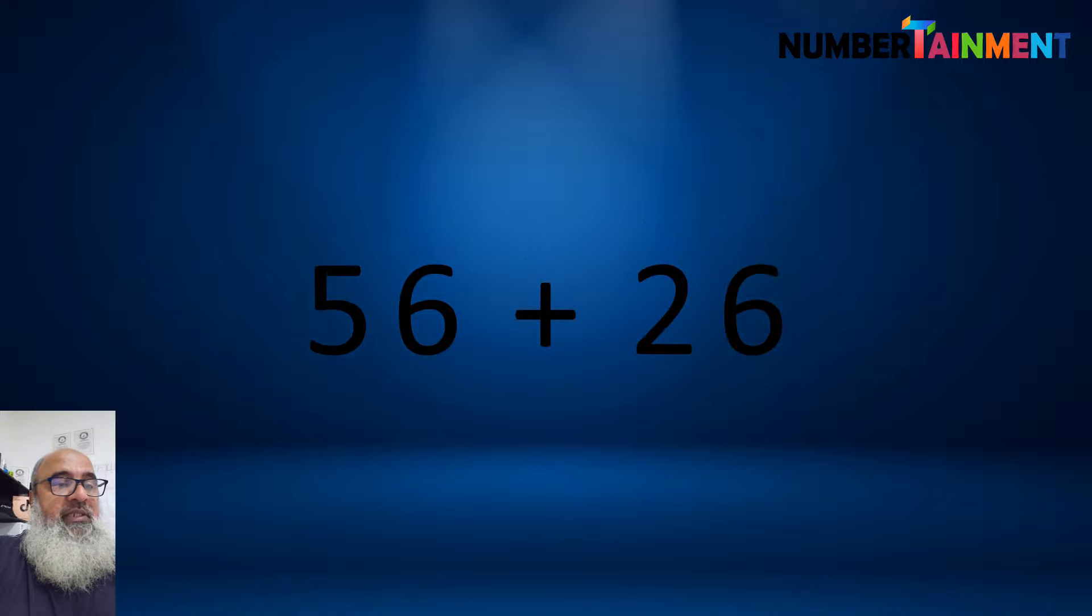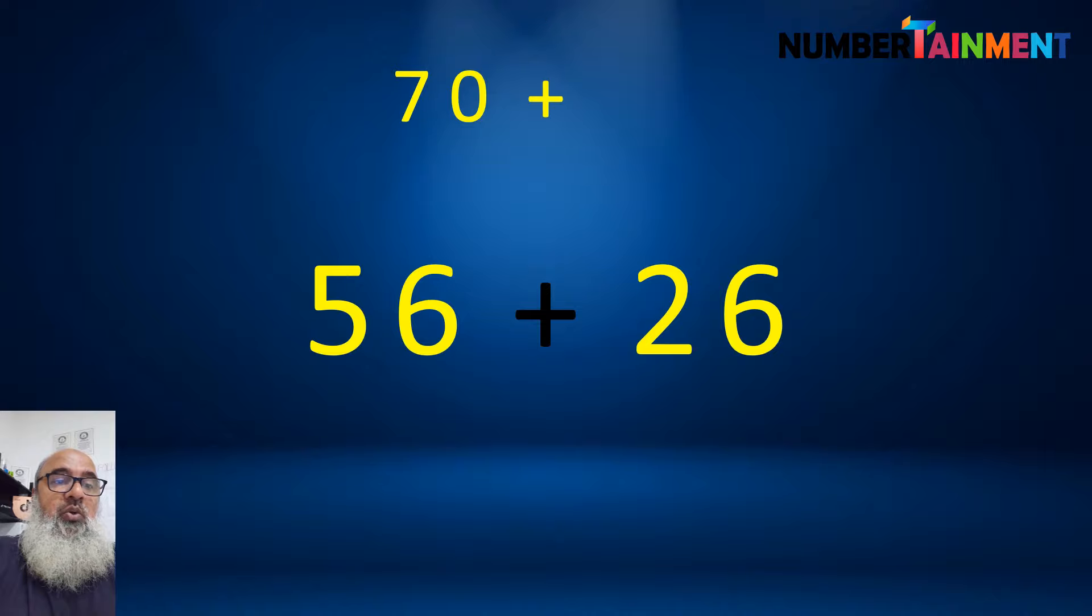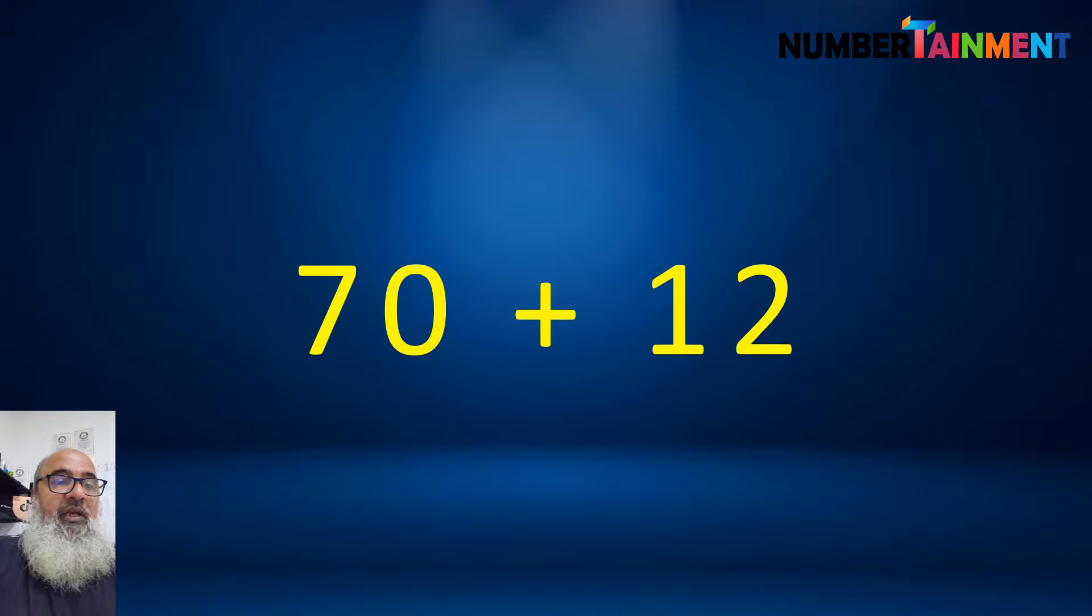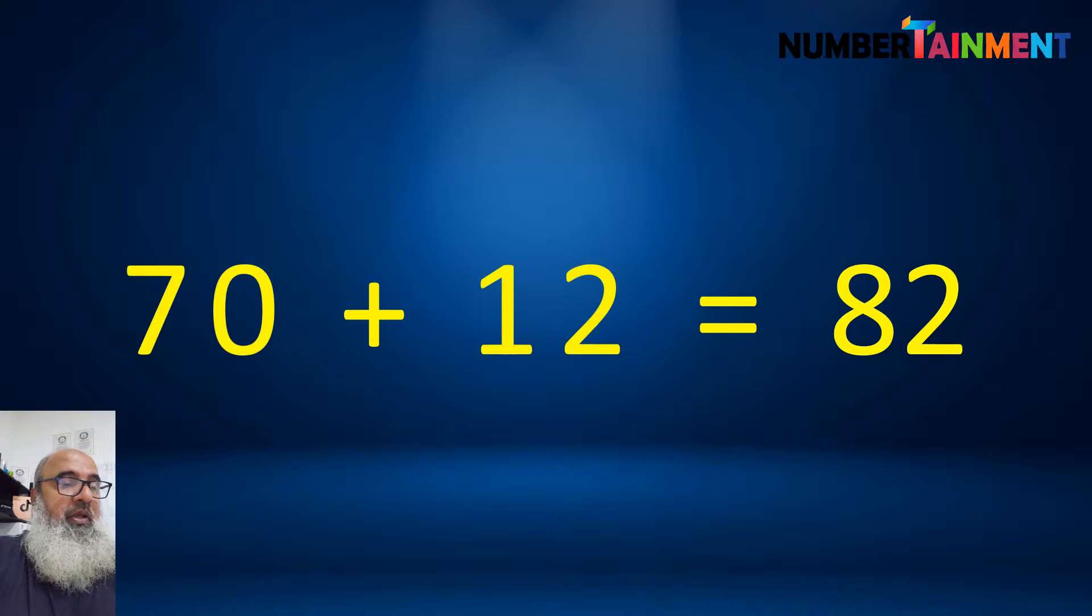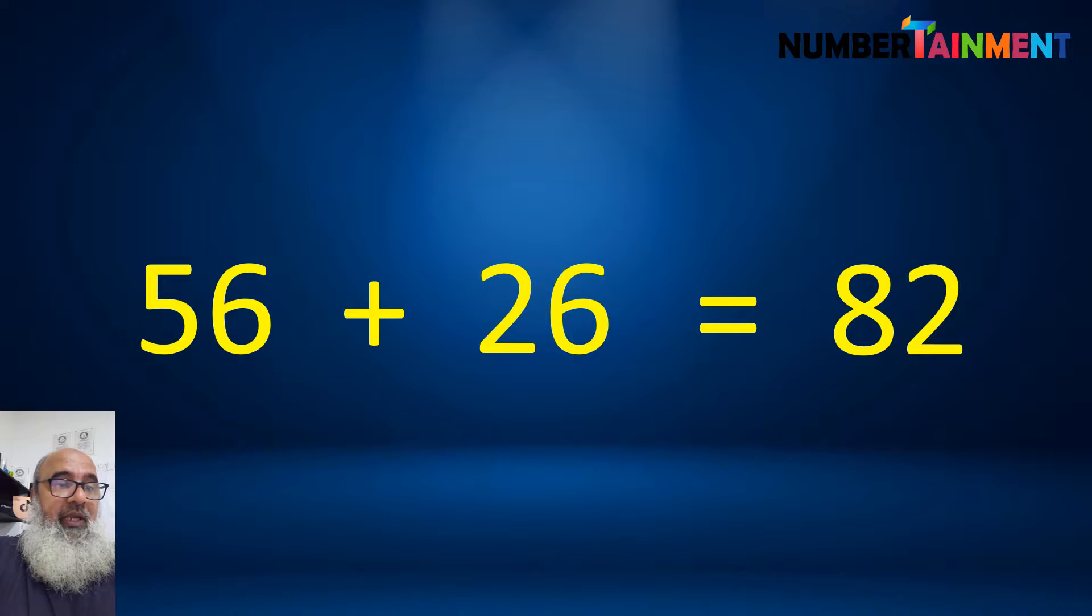In 56 plus 26, we get 7 tens or 70. Then in the units, we have 6 plus 6 is equal to 12. And 70 plus 12 is equal to 82. So 56 plus 26 is equal to 82.